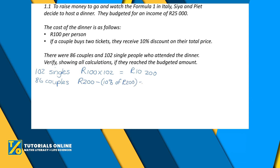That is equal to 200 rand minus 10% of 200 rand. 10% of 200 rand is 20 rand, so 200 minus 20 rand equals 180 rand. So each couple has to pay 180 rand because they've got a 20 rand discount.